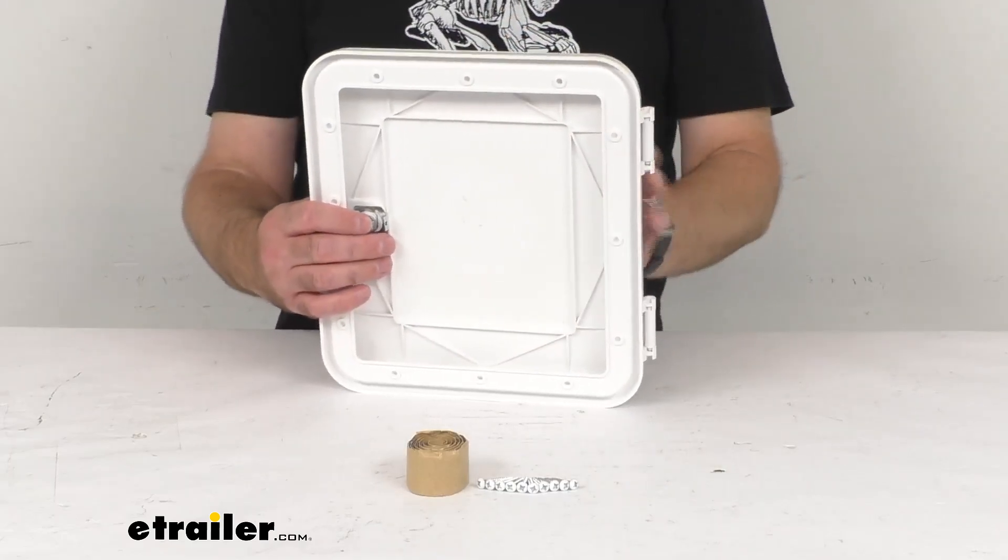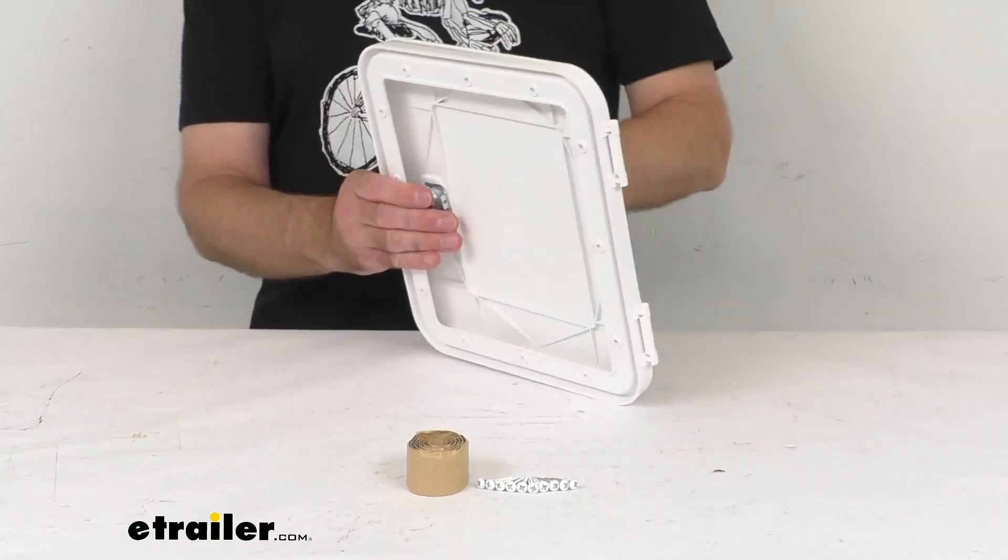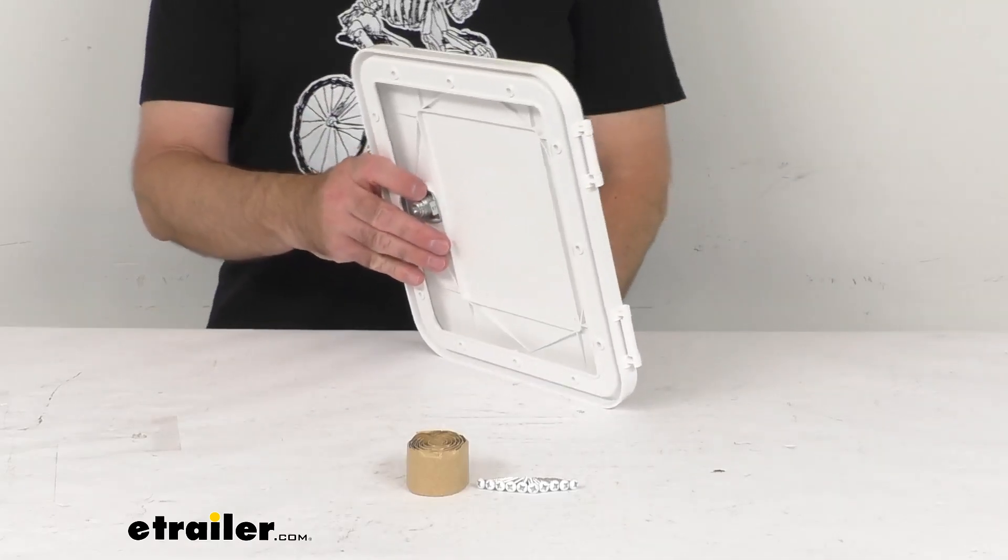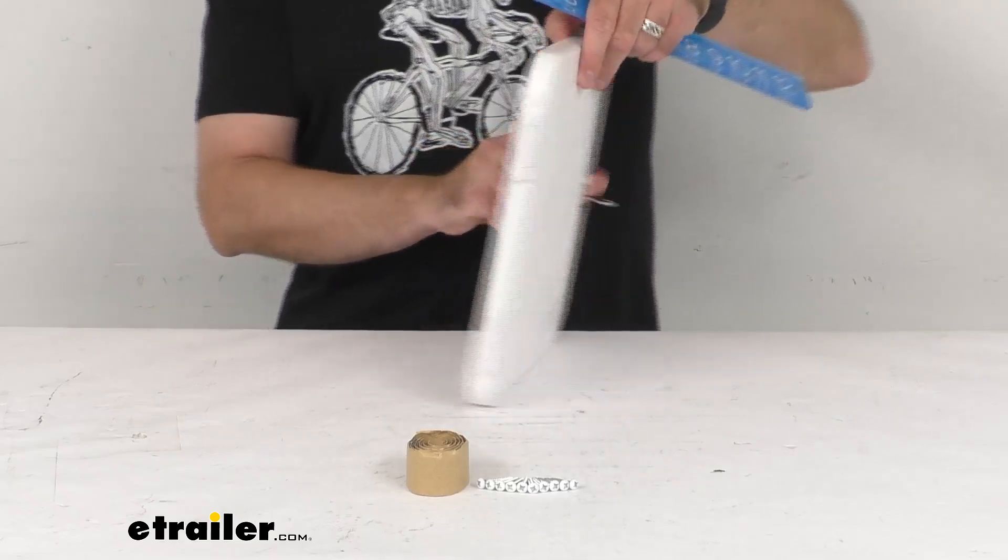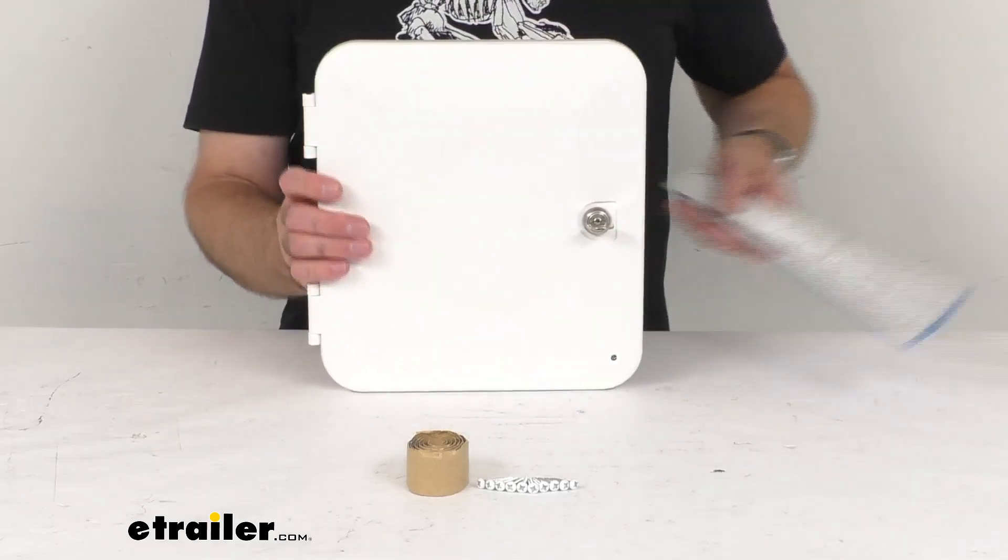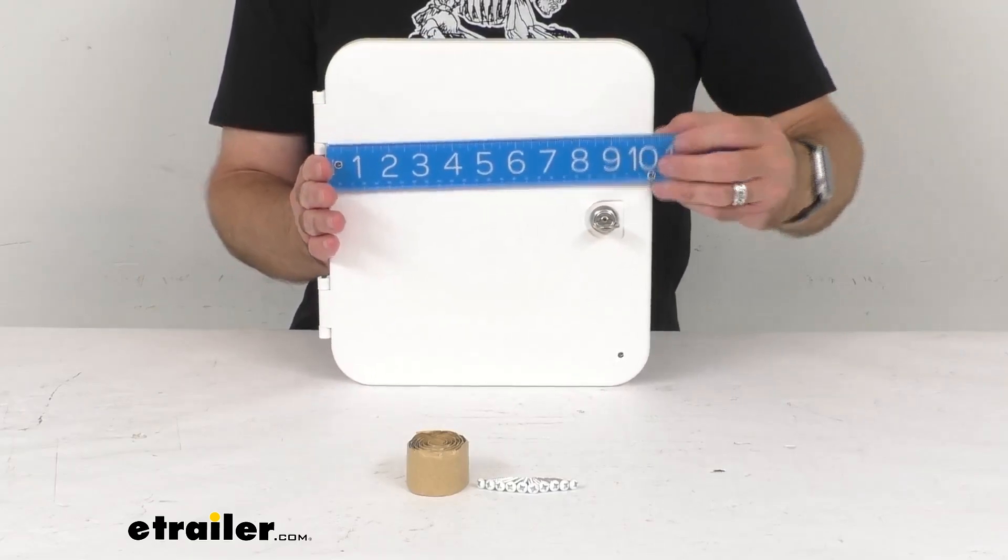Before we go any further, let me go ahead and give you some overall dimensions just so you can be confident this is going to work for you. Treating my ruler here, so looking at the outside width first.